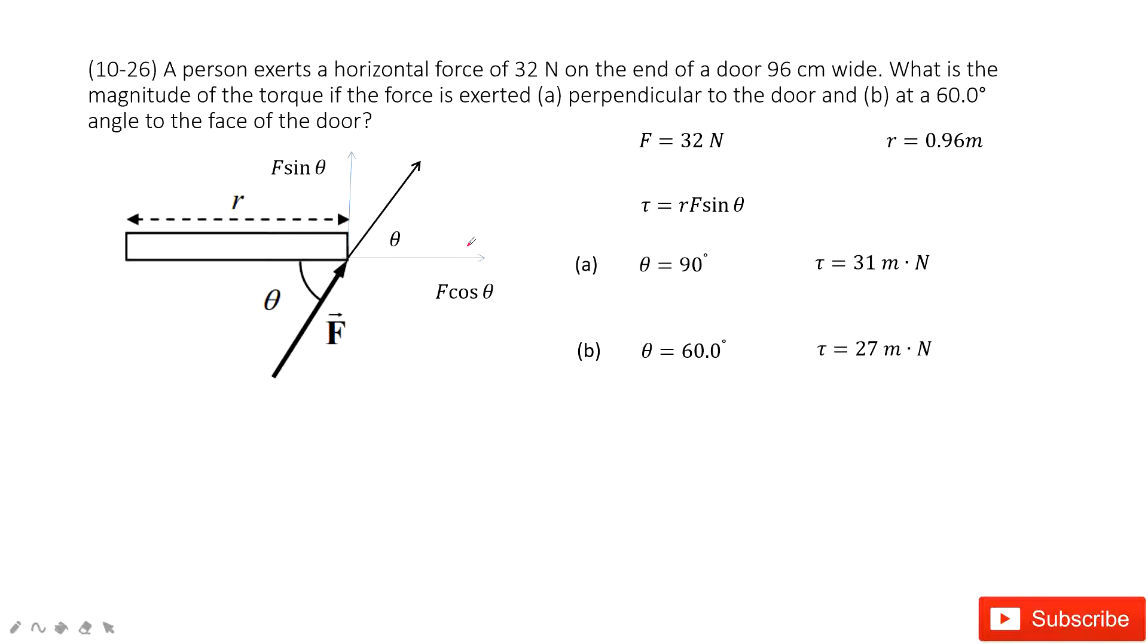In this chapter, we will talk about rotational motion. As you can see for this model, we have a door. And at the end of the door, there's a force on it, F. And the length for this door, R, is given.